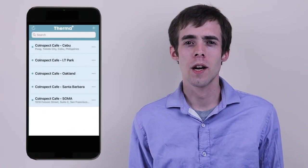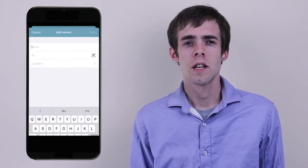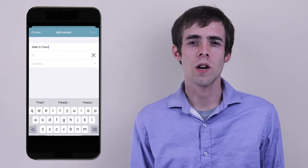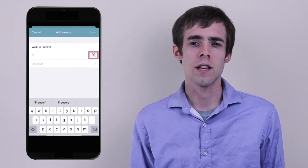Now we can add the sensors. Tap the plus icon in the upper right corner again and this time select the add sensor option. Give your sensor a name that reflects where it's going to be placed, like walk-in freezer or drive-through coldline. Use the QR code scanner to input the sensor's ID number.